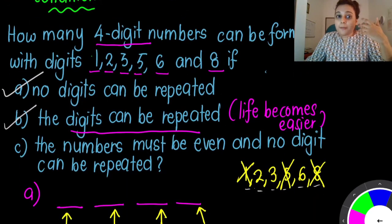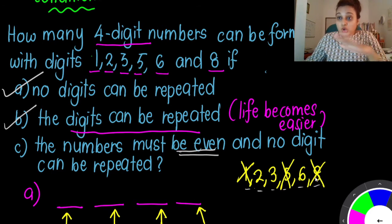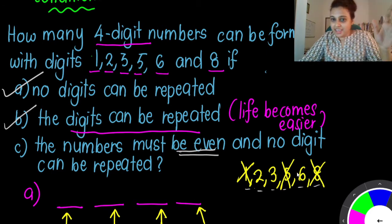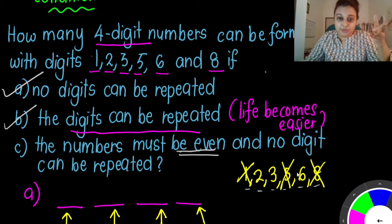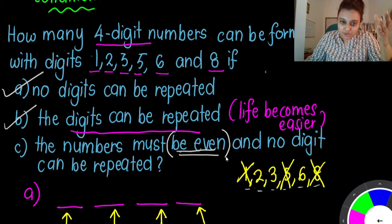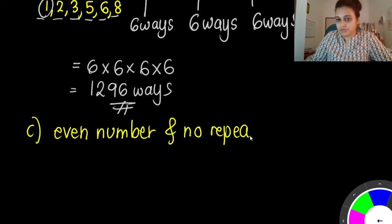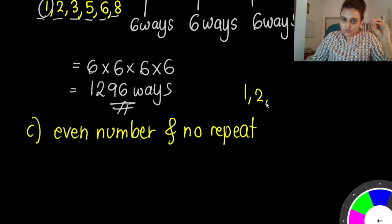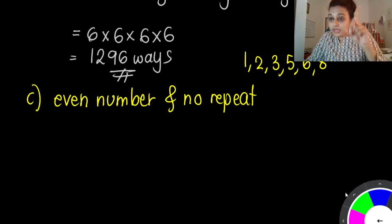Now let's look at question C: how many ways can we form if the numbers must be even? Take note — numbers must be even, and no digit can be repeated. Now teacher's going to ask you a question, and most students will do this mistake. You want to know even numbers — so looking at 20, 21, 22, 23: for you to know if a number is even or odd, are you seeing the first digit or the last digit?